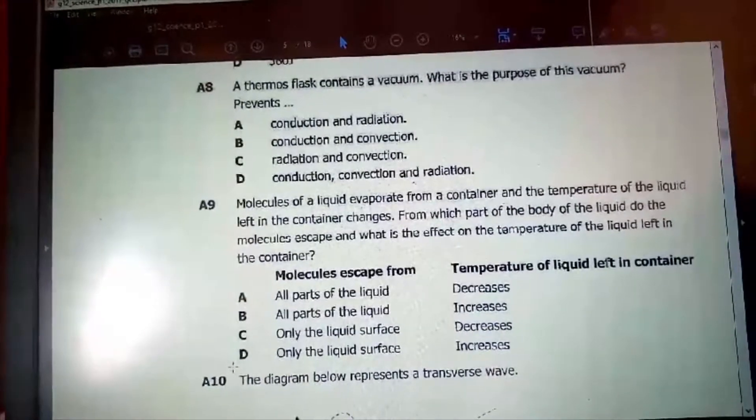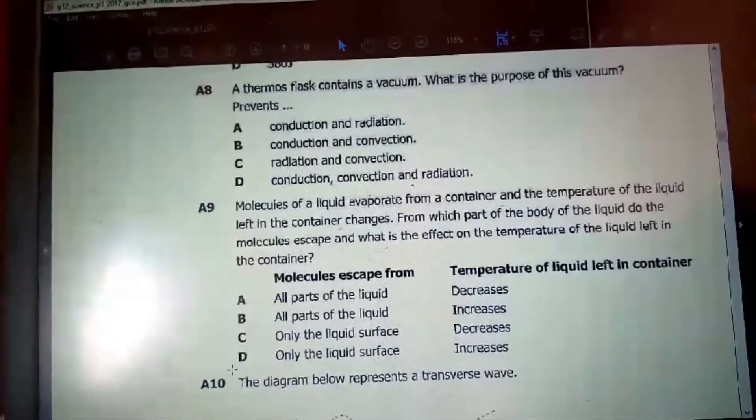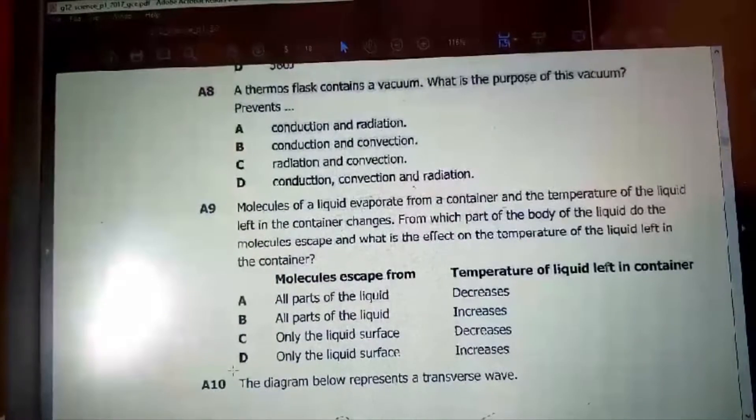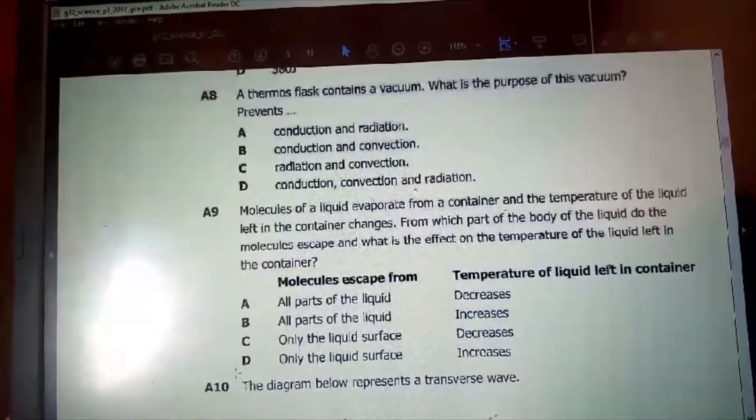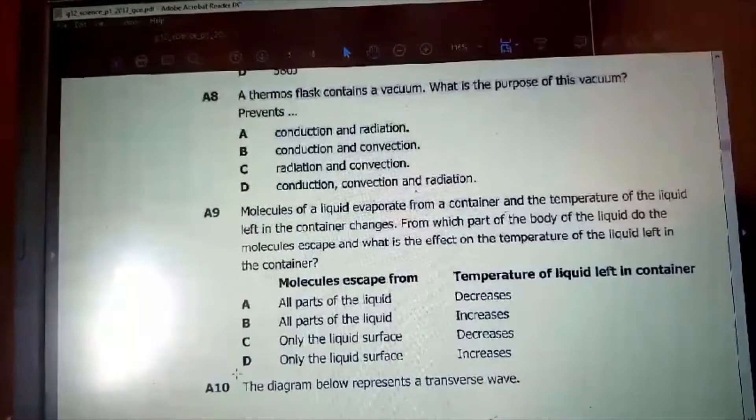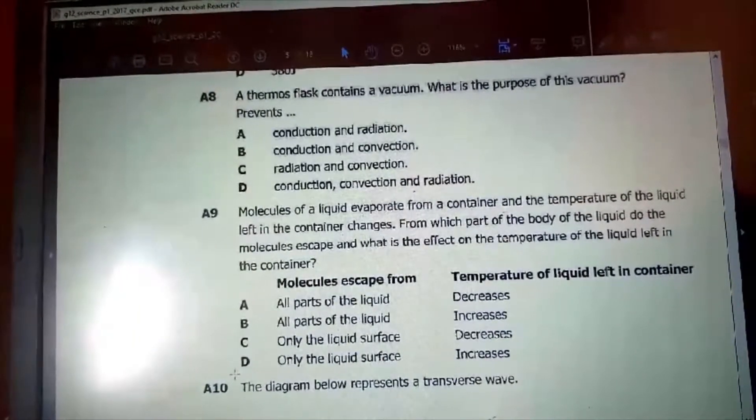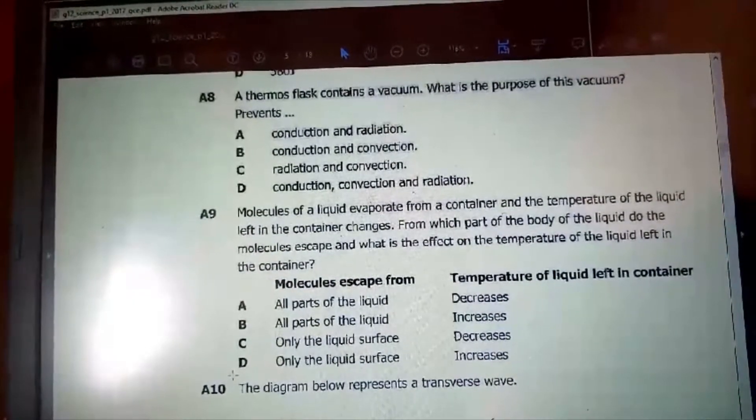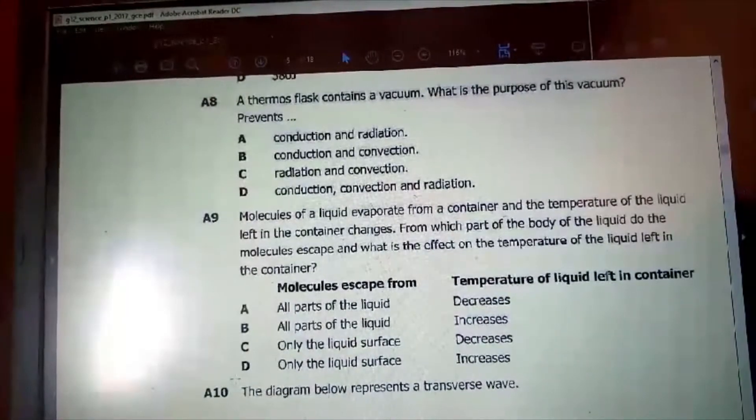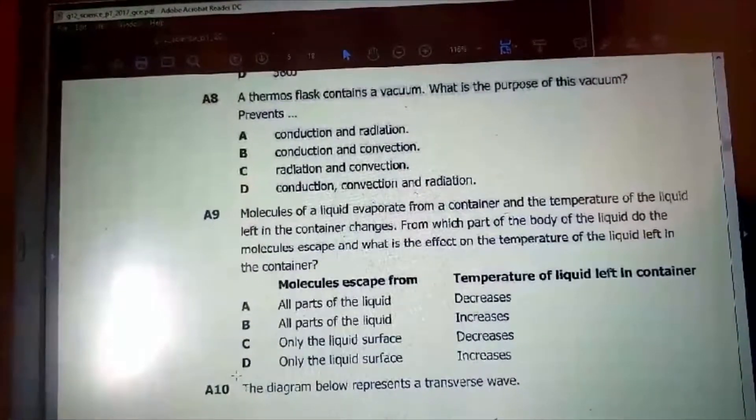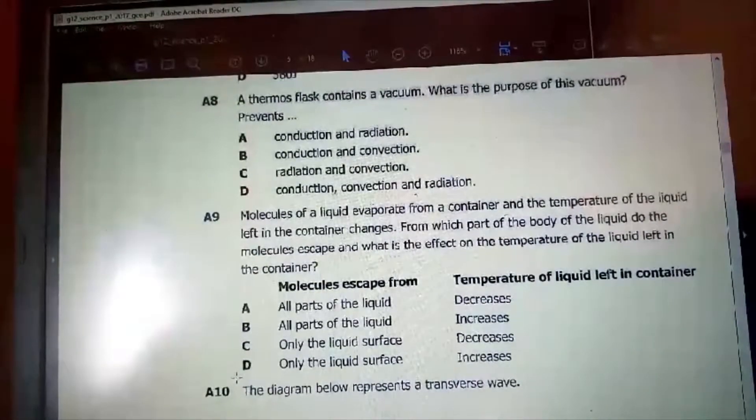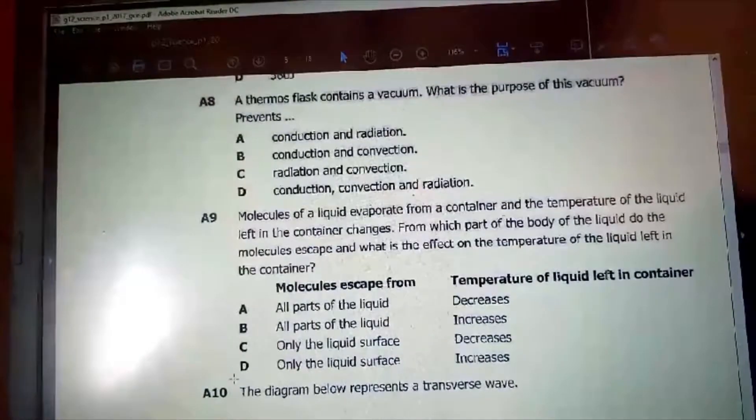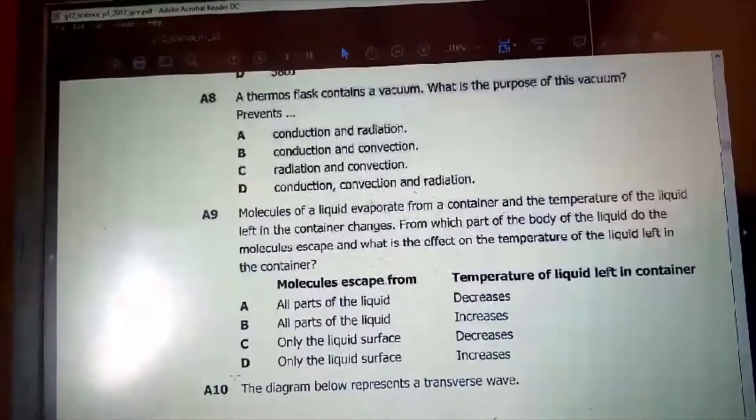Then for question 9, molecules of a liquid evaporate from a container and the temperature of the liquid left in the container changes. From which part of the body of the liquid do the molecules escape and what is the effect on the temperature of the liquid left in the container? So when a liquid is evaporating, the vapor that evaporates comes from the surface of the liquid. So it's only the liquid surface. And then the temperature would decrease.